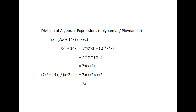Next, division of algebraic expressions — that is, polynomial divided by polynomial. For example, (7x² plus 14x) divided by (x plus 2). Here, 7x² plus 14x equals 7 into x into (x plus 2), which equals 7x(x plus 2). Therefore, (7x² plus 14x) divided by (x plus 2) equals 7x(x plus 2) divided by (x plus 2). Cancelling the common factor (x plus 2), we get 7x.